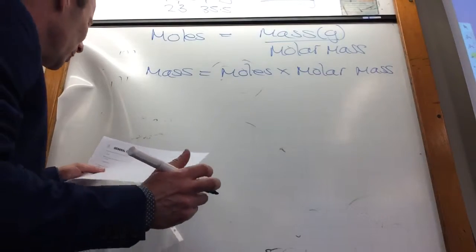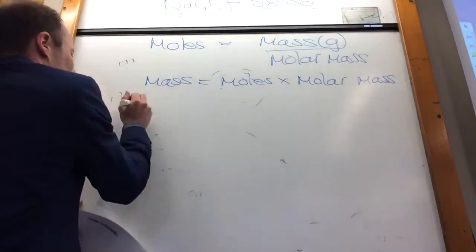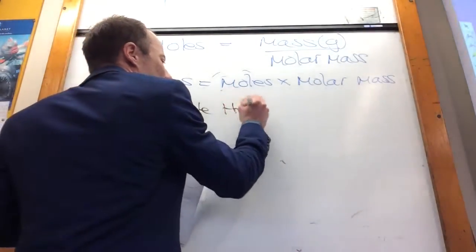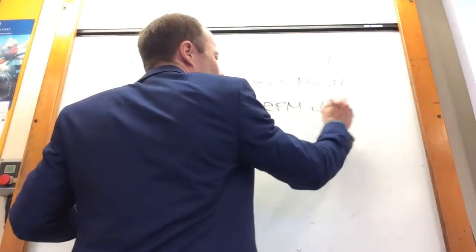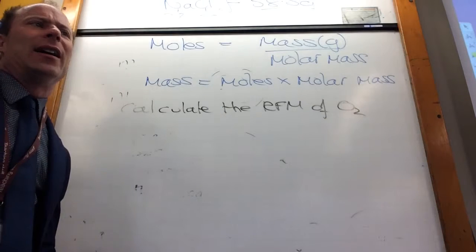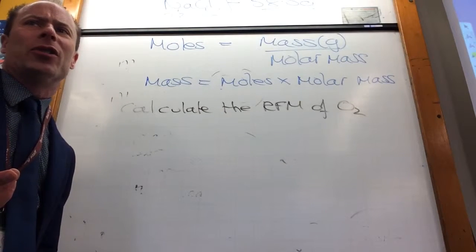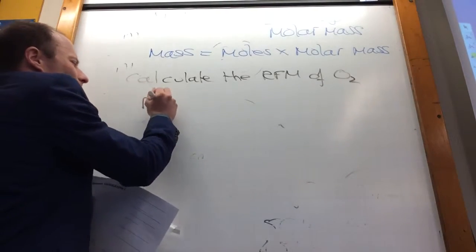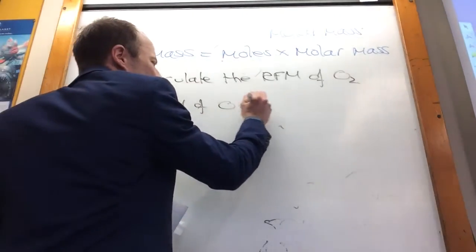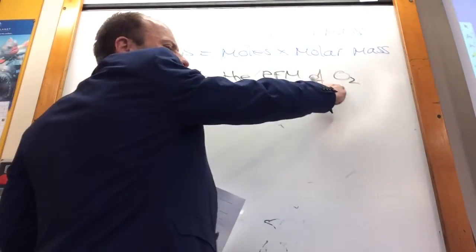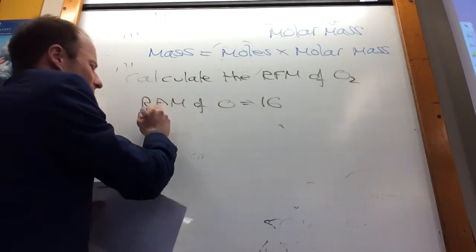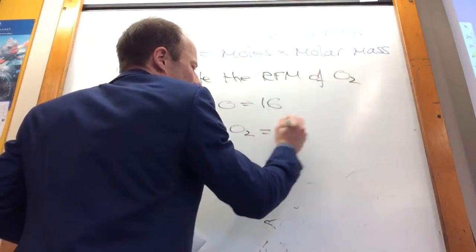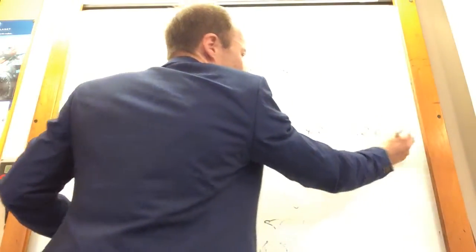So the first example it wants me to do is to calculate the relative formula mass of oxygen. How would I do that? I need to find out how much, what's the relative formula mass of oxygen? What do you do? So you go to the periodic table. The relative atomic mass of oxygen is 16. So what would be the relative formula mass of O2? 32. So the relative formula mass of O2 is equal to 16 times 2, which is 32 grams.